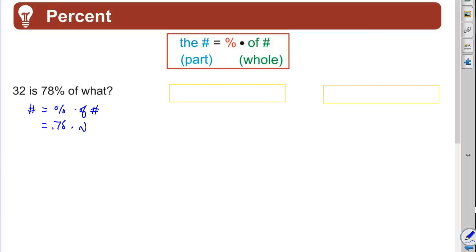78 percent—remember percents are always in decimal form—therefore 32 is the number. Right, 32 is what part of the whole. And we're simply going to divide both sides by 0.78 to solve this.